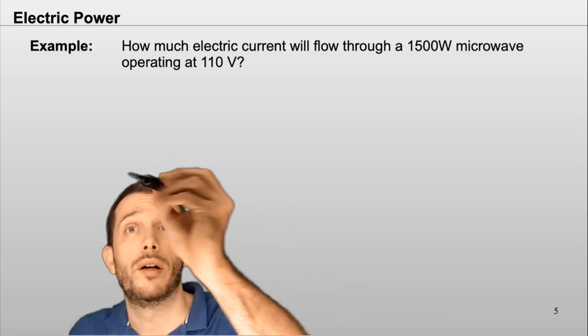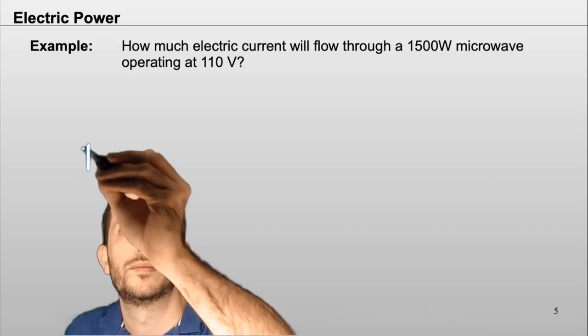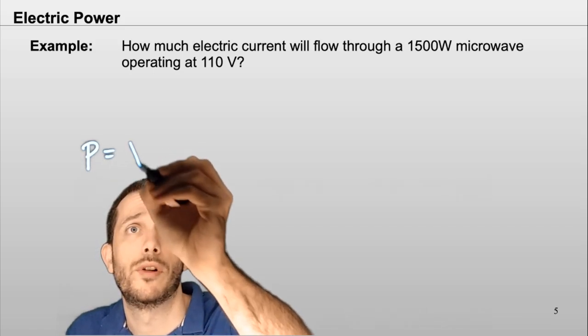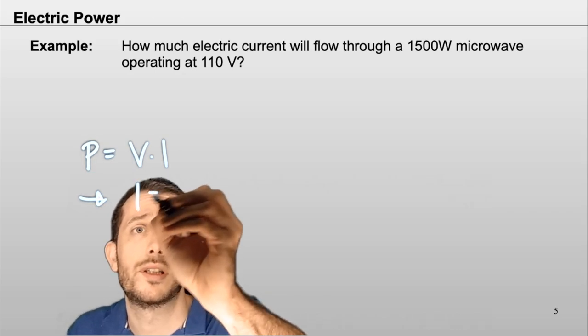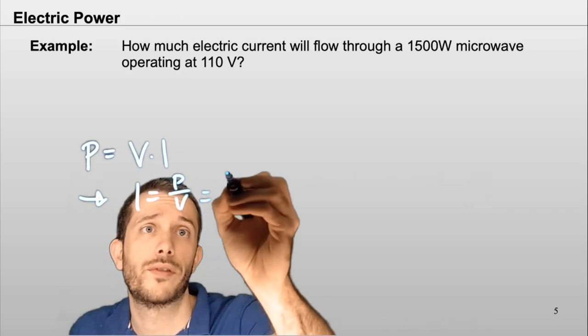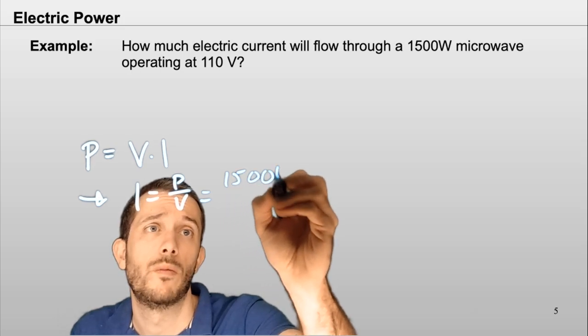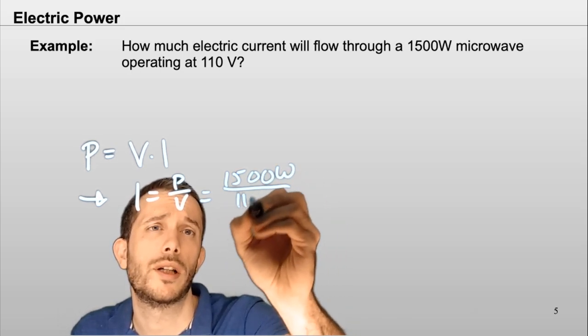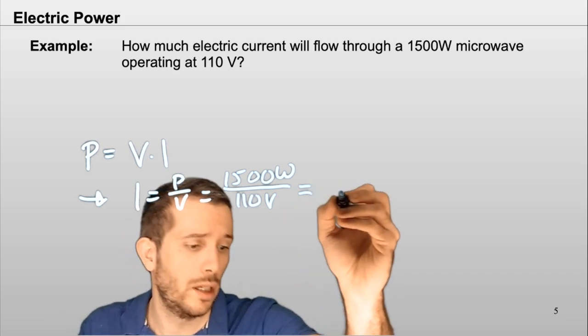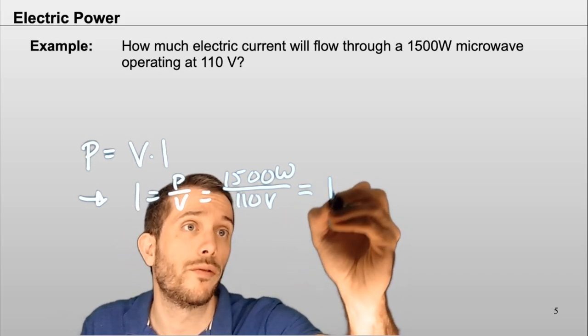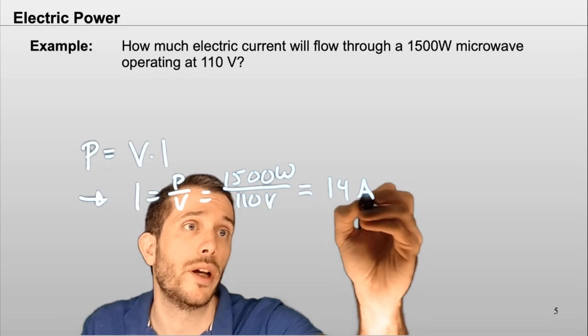So power is voltage times current. Therefore, if we're solving for current, this is power over voltage. So we have 1500 watt over 110 volt gives me around 14 amperes.